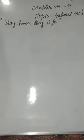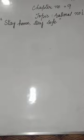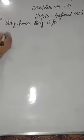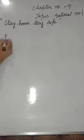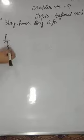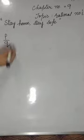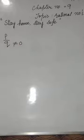First of all, what is a rational number? A rational number is a number that can be expressed in the form of P by Q, where P and Q are integers and Q is not equal to 0. This means rational numbers wo P by Q ki form mein hote hain, aur dono P and Q integers hote hain aur Q not equal to 0 hota hai.